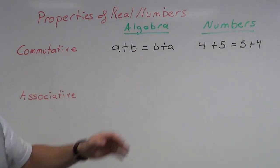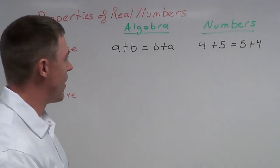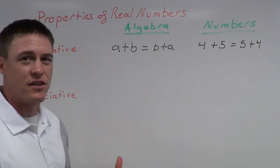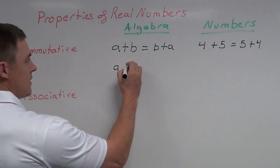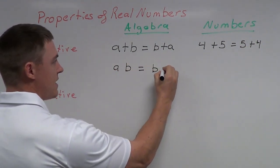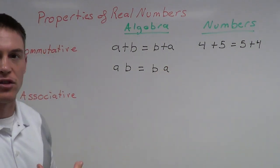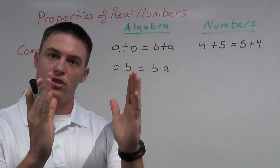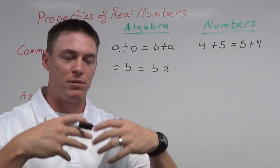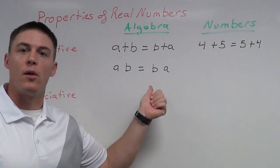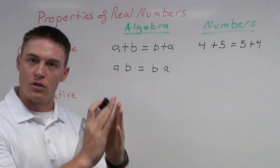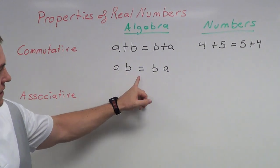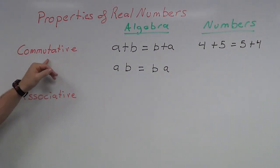Now for the commutative property of multiplication. I'm going to use some of the same variables, but this time multiplying, so it looks very similar but it's a separate property. A times B equals B times A. Notice I didn't put a multiplication symbol between them — when we put two variables next to one another there's implied multiplication. We just know we're supposed to multiply them together. Commutative property tells us it doesn't matter what order I multiply them in — I'm still going to get the same answer.